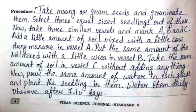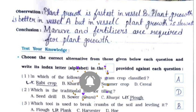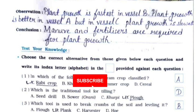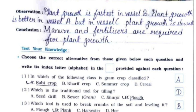Now pour the same amount of water in each glass and plant the seedlings in them. Water them daily and observe after 7 to 10 days. The observation is: plant growth is fastest in vessel B, plant growth is better in vessel A, but in vessel C plant growth is slowest.